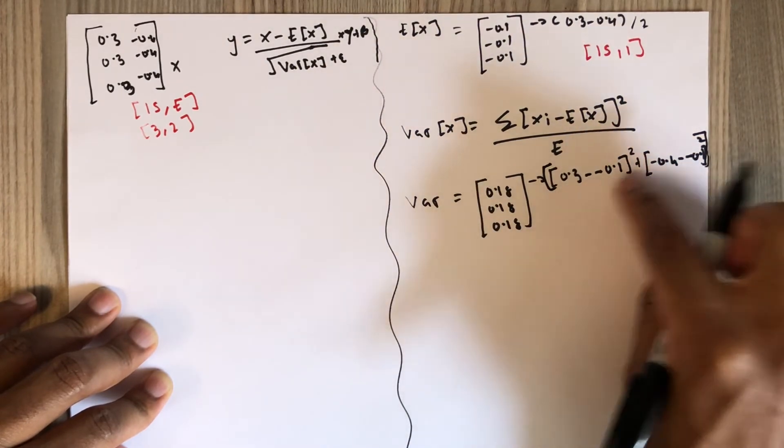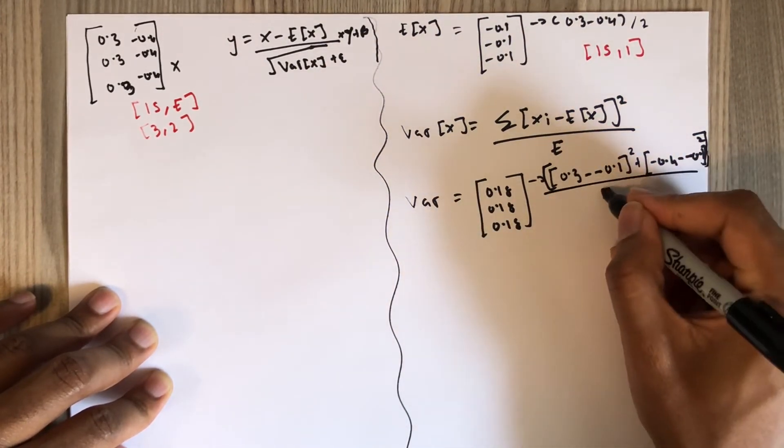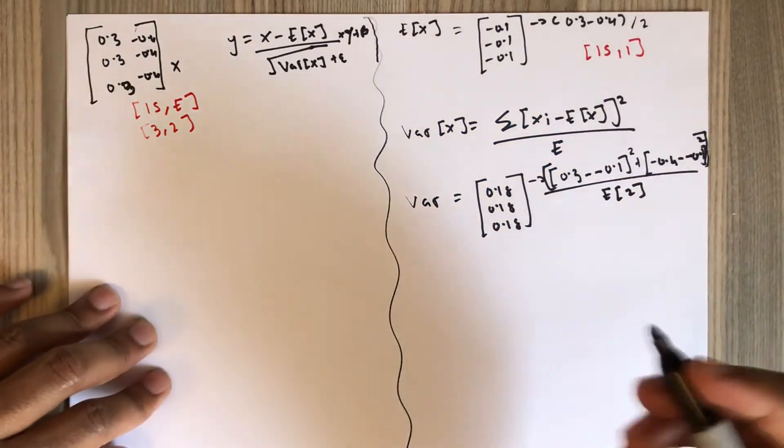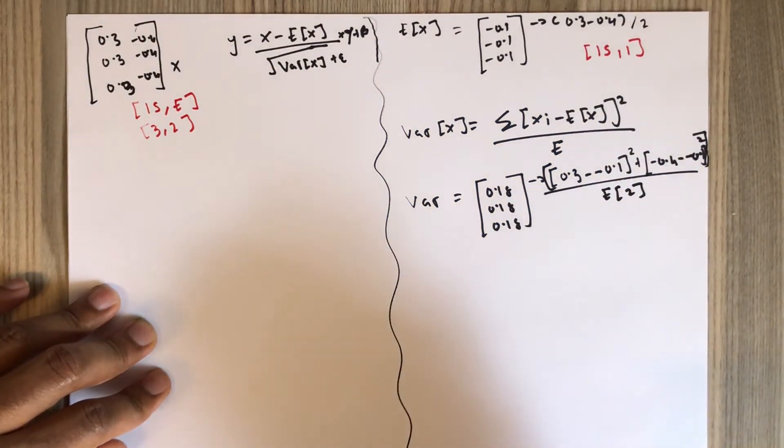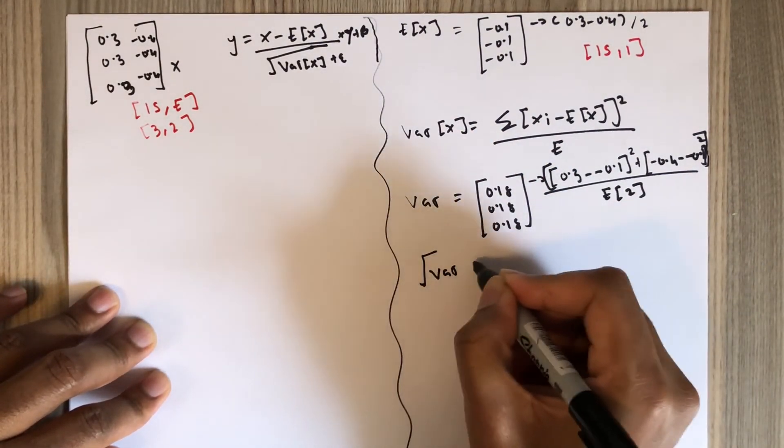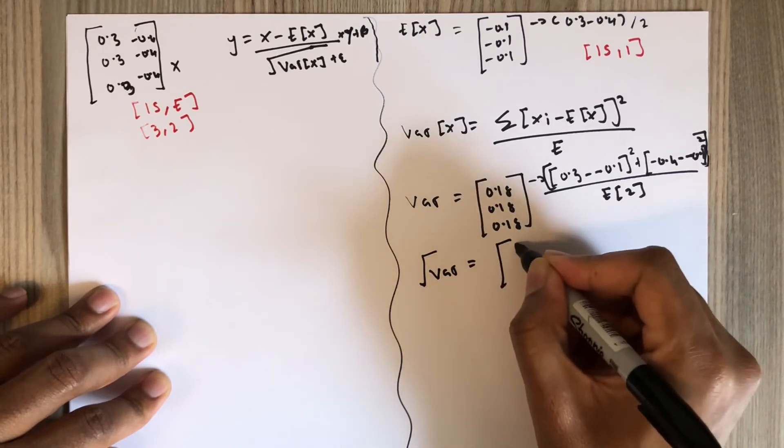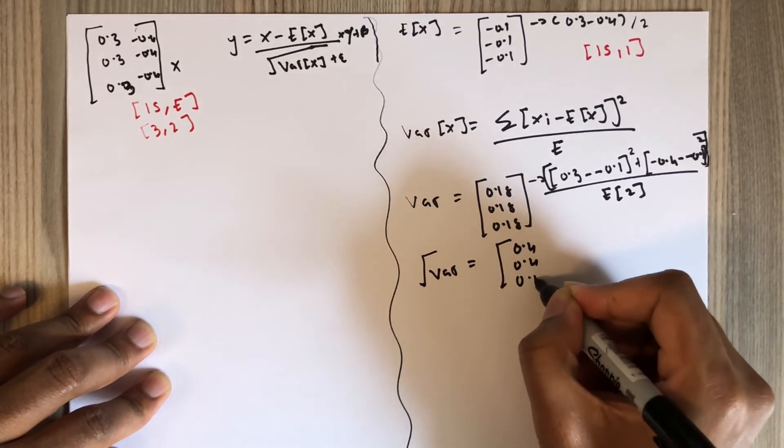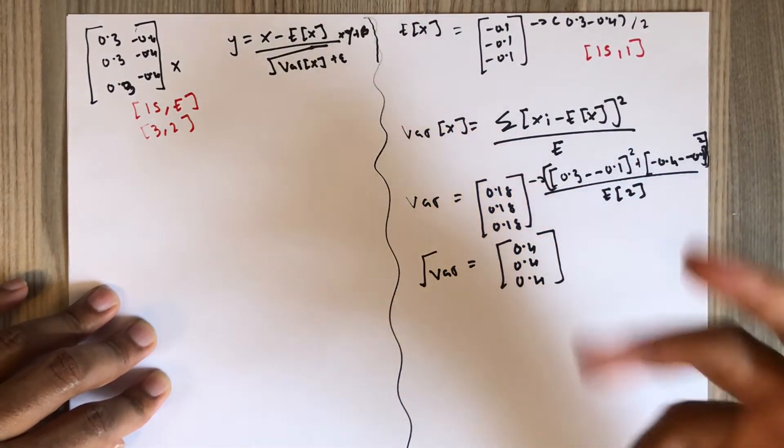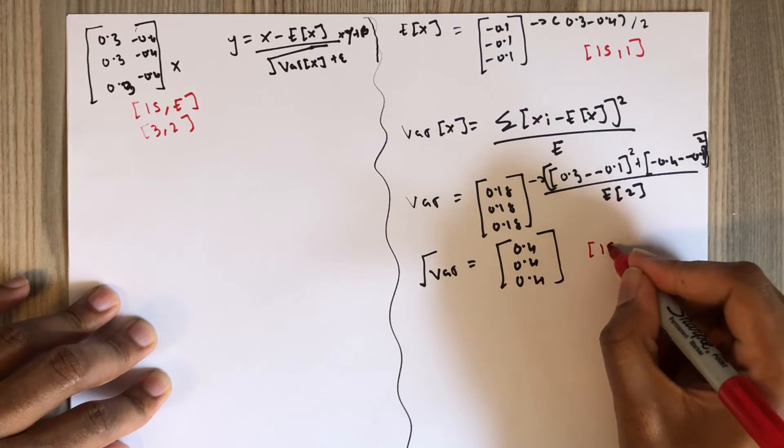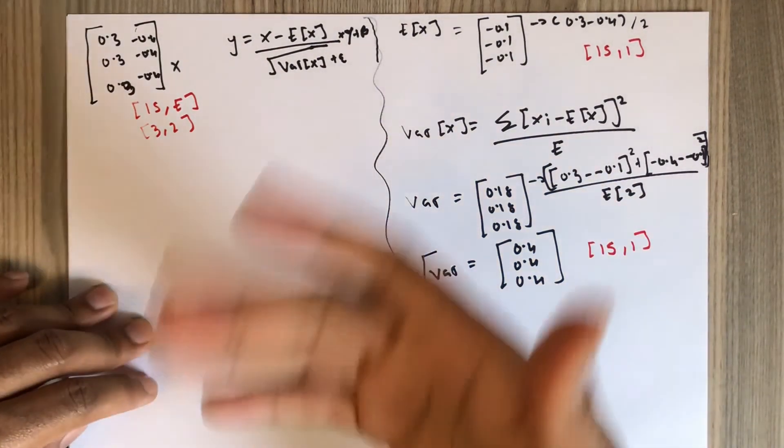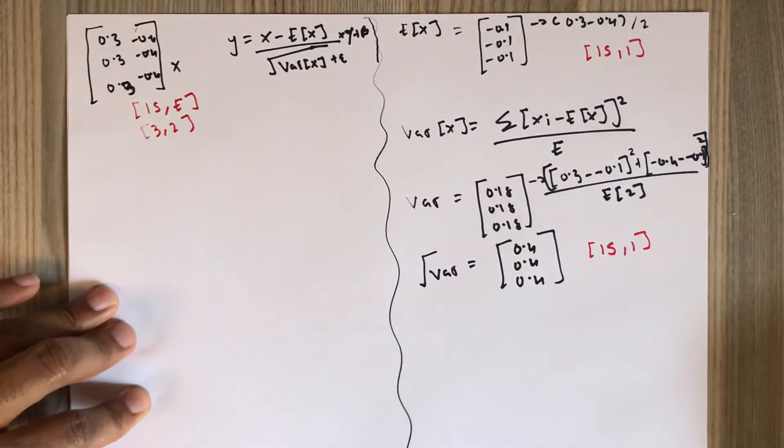You add them, then divide by E, which is 2. That's how I computed 0.18. We also need to compute the square root of the variance, which is 0.4, 0.4, and 0.4. By the way, there might be some mistakes in the calculations. Its dimension is IS by 1. We have the expected value and the variance, so we just need to plug it into the final formula.